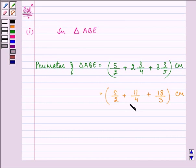Now to add these unlike fractions, we need to first take the LCM. So the LCM of 2, 4 and 5 is 20.